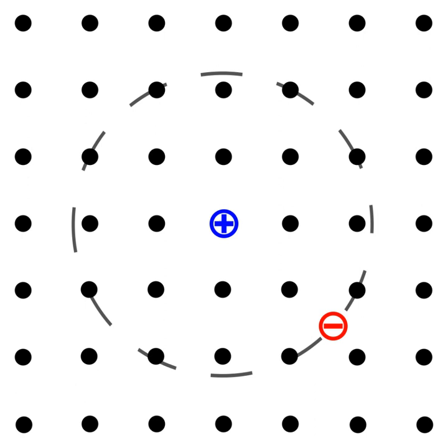At surfaces it is possible for so-called image states to occur, where the hole is inside the solid and the electron is in the vacuum. These electron-hole pairs can only move along the surface.